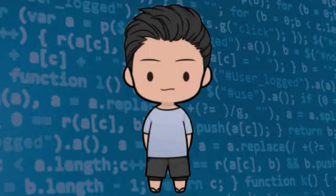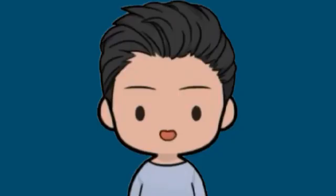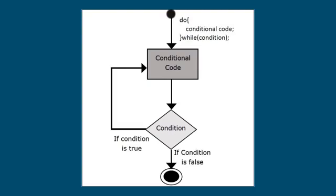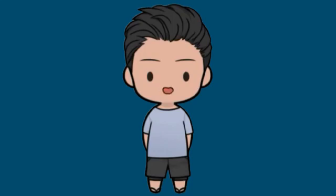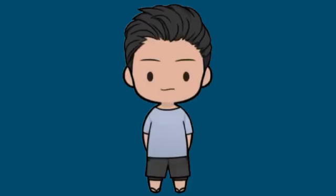Now that we know a lot of things about an algorithm, how do we actually write one? There are no well-defined standards for writing algorithms. Rather, it is problem and resource dependent. Algorithms are never written to support a particular programming code. All programming languages share basic code constructs like loops (do, for, while), flow control (if-else), and many more. These common constructs can be used to write an algorithm. Algorithm writing is a process executed after the problem domain is well-defined — we should know the problem domain for which we are designing a solution.